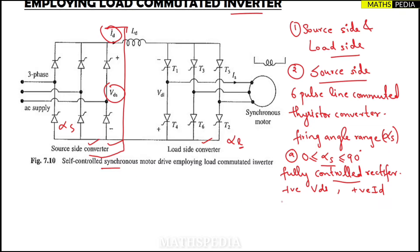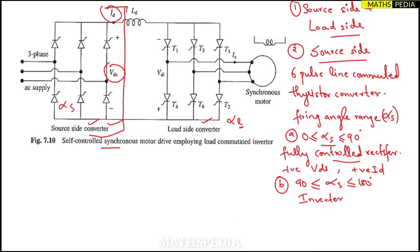For case B, when the angle is between 90 to 180 degrees, the source side converter will act as an inverter. In this case it will deliver negative Vds and positive id. So id is positive in both cases, but Vds is positive in case A and negative in case B. This is what happens in the source side converter.